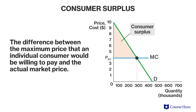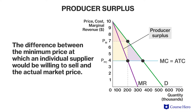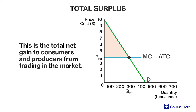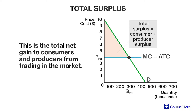Consumer surplus is the area below the demand curve and above the market price. Producer surplus is the difference between the minimum price at which an individual supplier would be willing to sell a good or service and the actual market price that the supplier receives. It is the area above the supply curve and below the market price. Total surplus is the total net gain to consumers and producers from trading in a market — it is the sum of consumer and producer surplus.